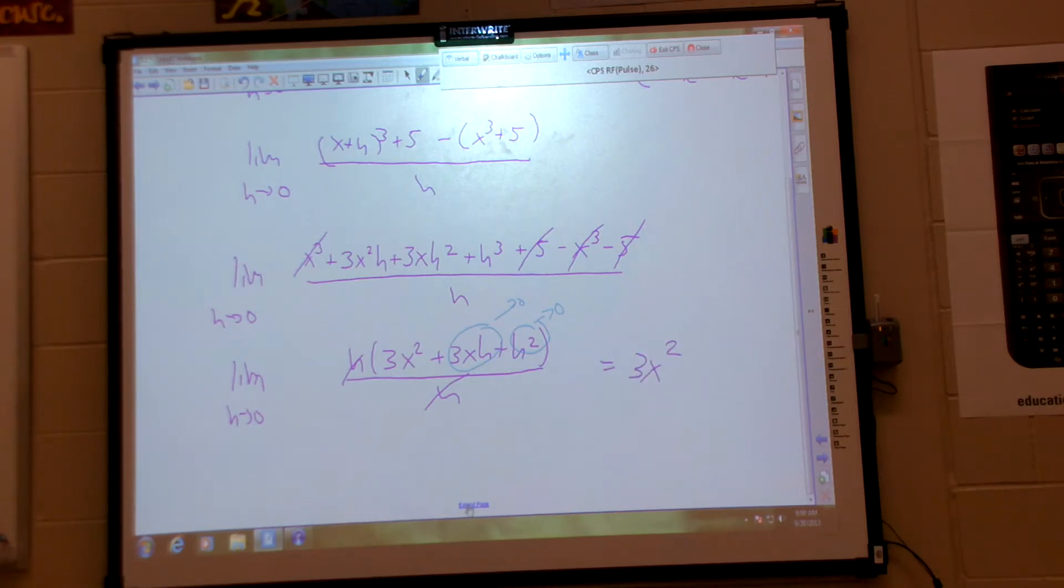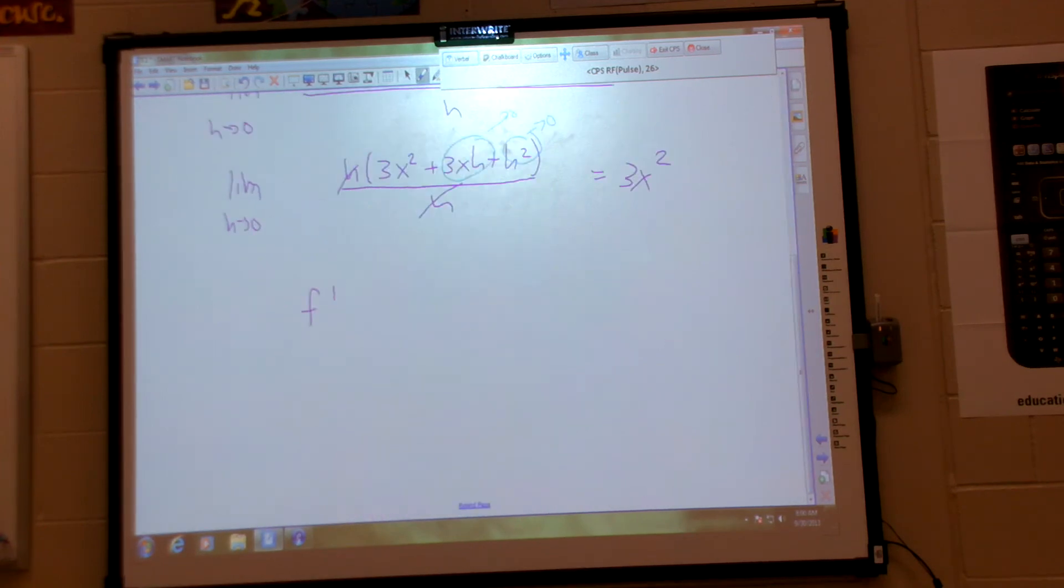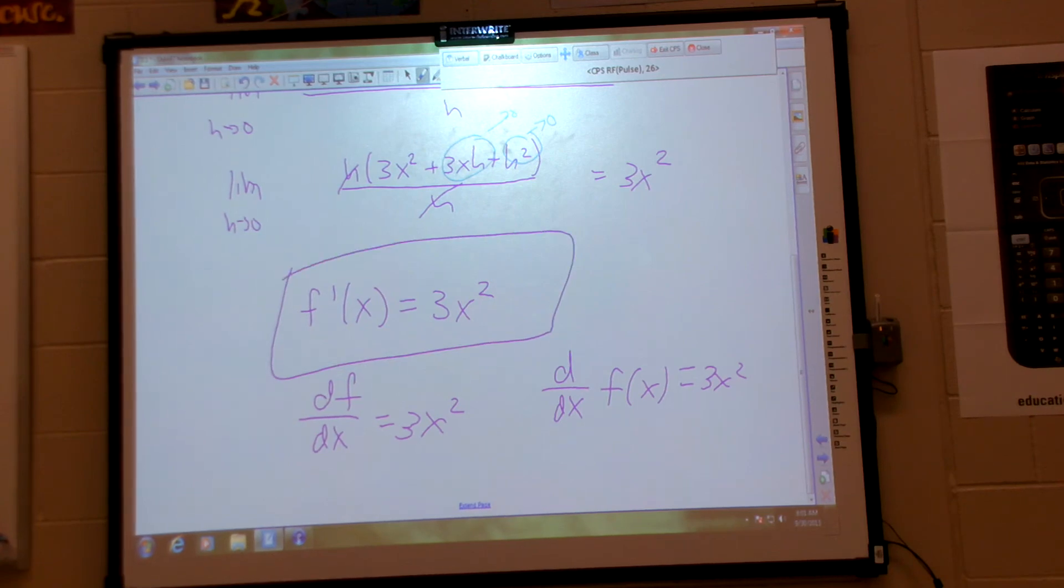But now we're going to use proper notation. I was given F of X. So I'm going to say F prime of X is equal to 3X squared. I could have said dF/dX equals 3X squared. Exact same thing. Or I could have said d/dx F of X is 3X squared. But usually for shorthand, in this case, which is straight up asking for derivative, we just go straight to F prime.